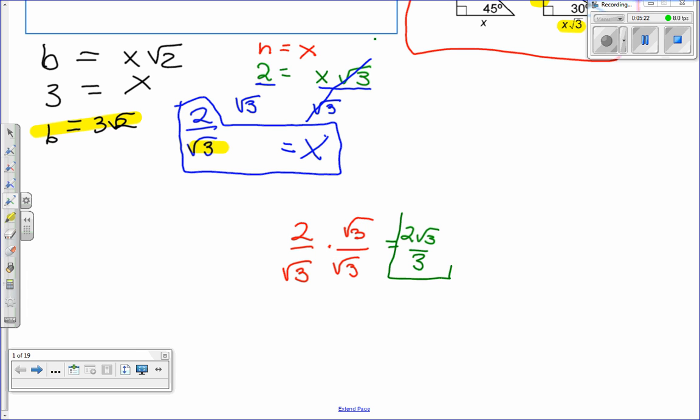So what we did is we divided by √3 on both sides, we got x is equal to 2 divided by √3, and we rationalized the denominator to get 2√3 over 3, and then that's going to be your solution. So that's what h is equal to, and then we're done.